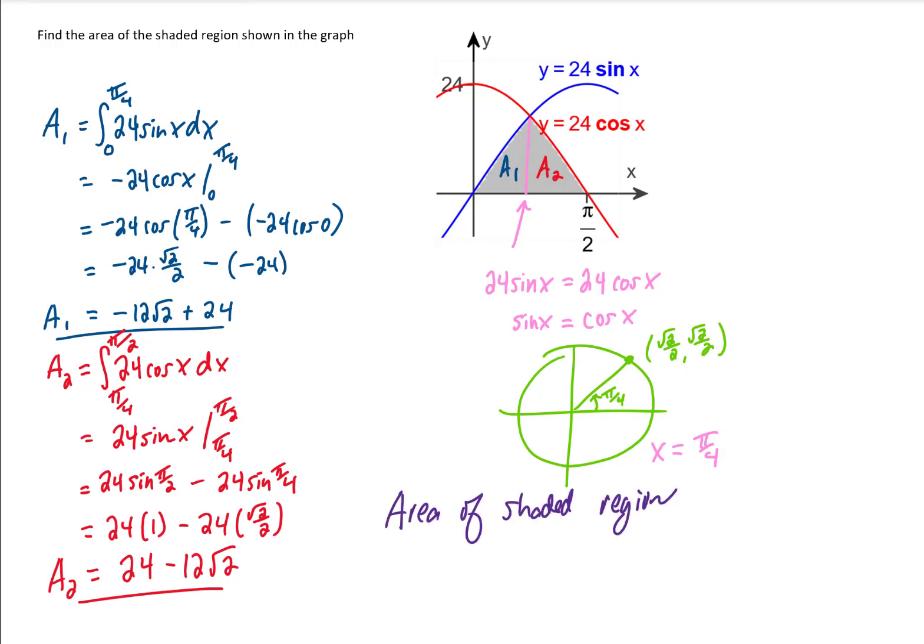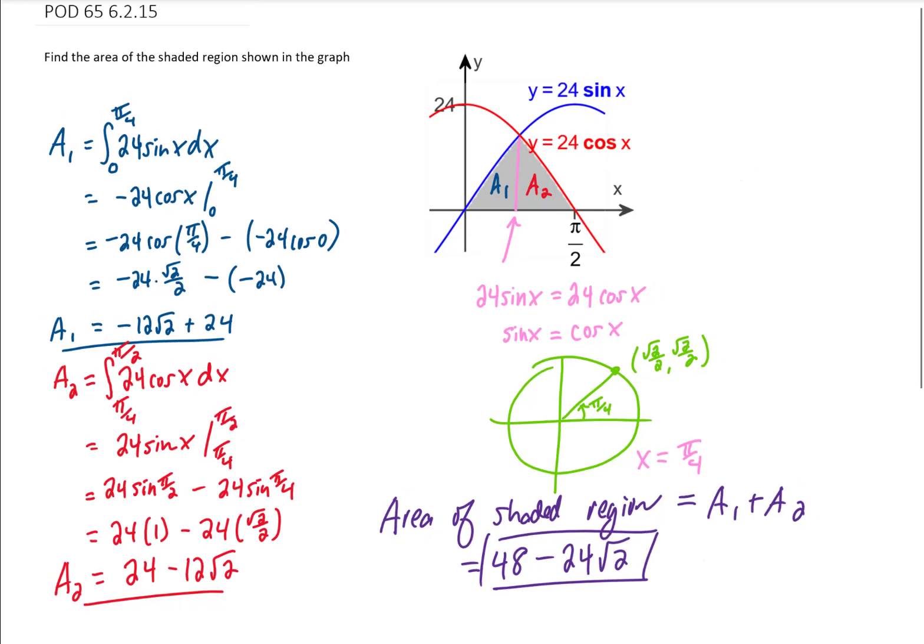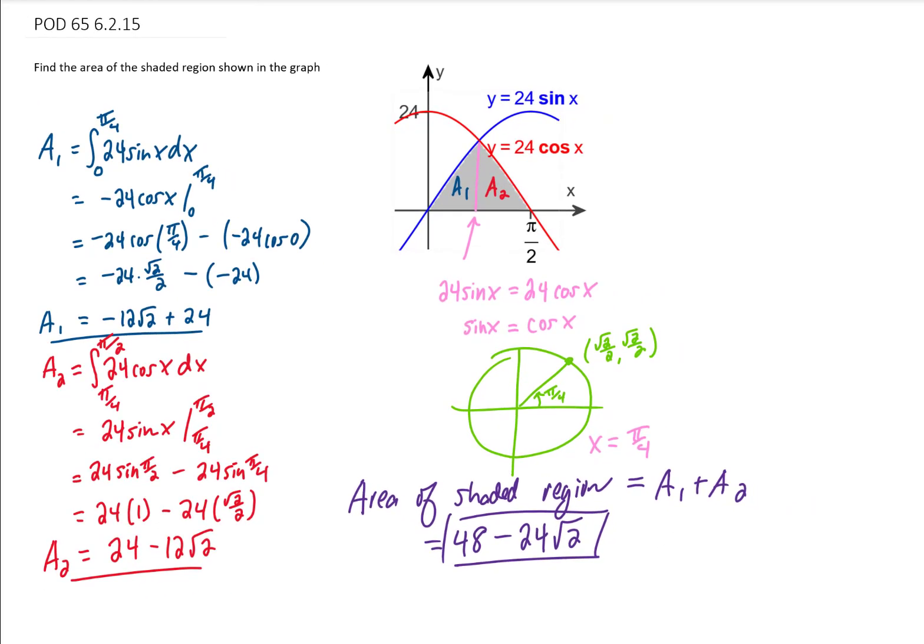Finally, the total area of that shaded region is going to be A1 plus A2 and that's just going to be the sum of these two things. That's going to be 48 minus 24 square root of 2. That is an exact answer. If you need a decimal approximation you can plug that into a calculator. And we weren't given any units so this is just going to be measured in square units. And that is it for this problem. We're going to find some more areas in the next problem of the day so I will see you there.